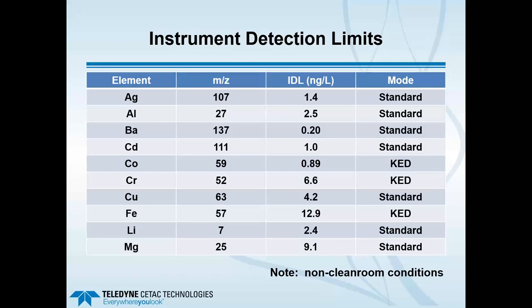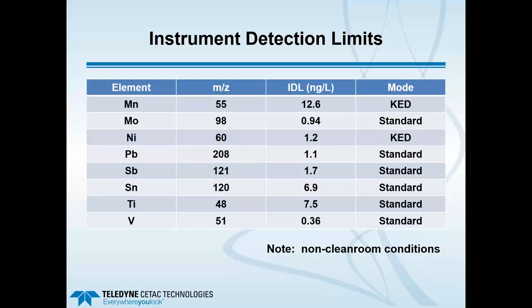Instrument detection limits ranged from about 0.2 to 15 nanograms per liter, or 0.2 to 15 parts per trillion. You can see the elements done in standard mode (no KED gas) and some run with KED, including cobalt, chromium, and iron. This analysis was done under non-cleanroom conditions and without an electronic grade of isopropyl alcohol — we did not have electronic-grade IPA available for these tests. So these detection limits are quite good considering the conditions.